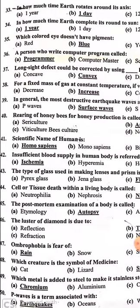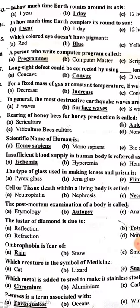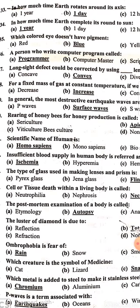The Earth rotates around its own axis in one day, and the Earth completes its revolution around the sun in one year. Which color eye does not have pigment? Blue.